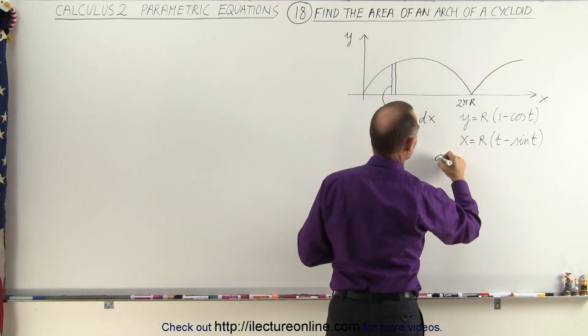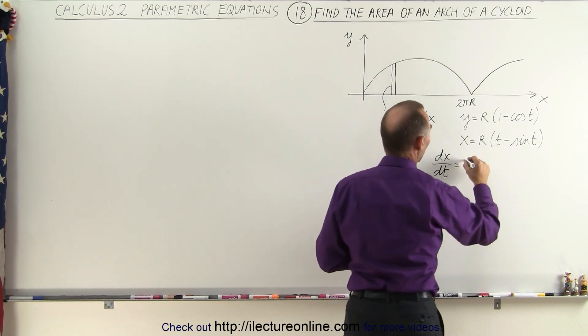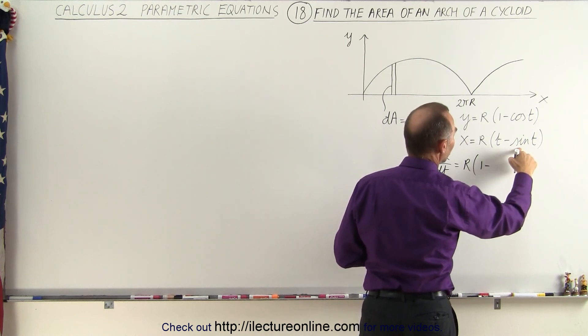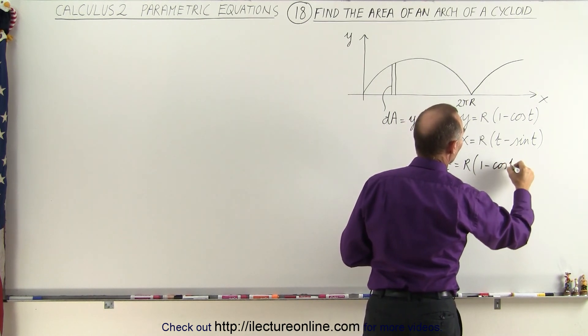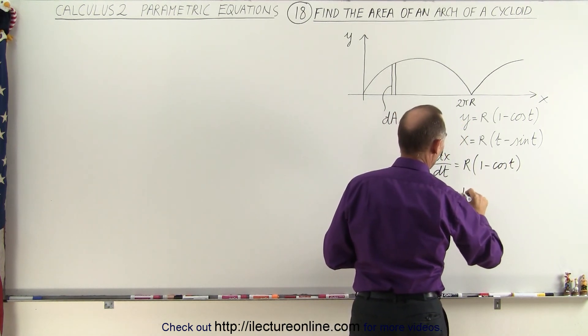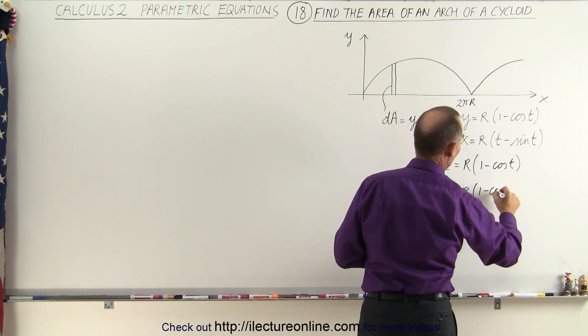To do that we go dx/dt is equal to r times the derivative of t is 1 minus the derivative of the sine is the cosine of t. Now we move the dt over here so we have dx is equal to r times 1 minus the cosine of t times dt.